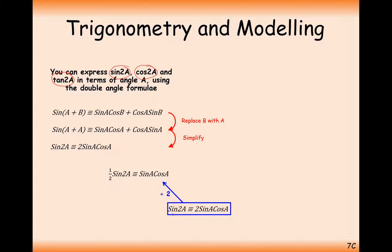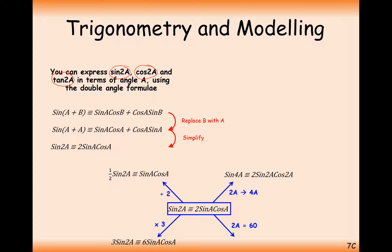This formula can be given in multiple different ways. You can halve both sides, so if you have sine a times cos a you can rearrange it into a half sine 2a. You can use a 4 angle so sine 4a equals 2 sine 2a cos 2a, just doubling the angles. You can also times by 3 on the outside, or substitute specific values like 60 degrees, so sine 60 equals 2 sine 30 cos 30.